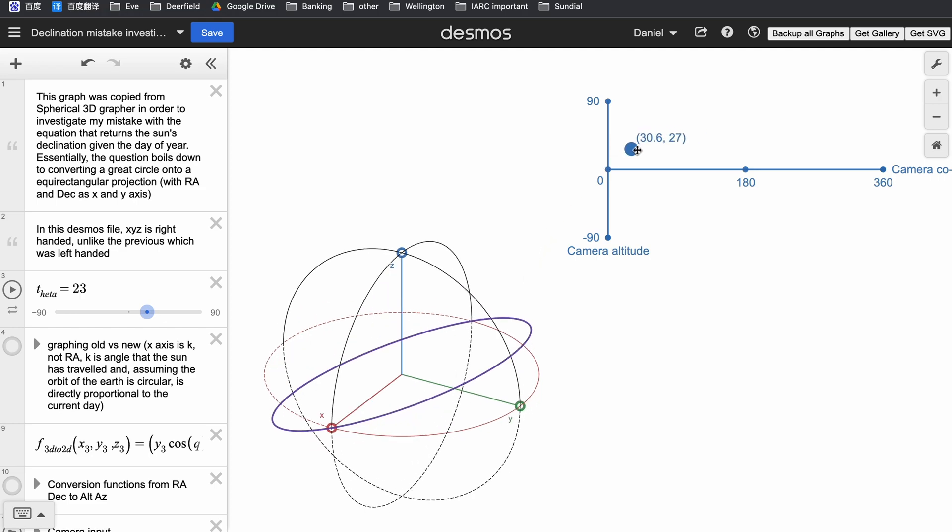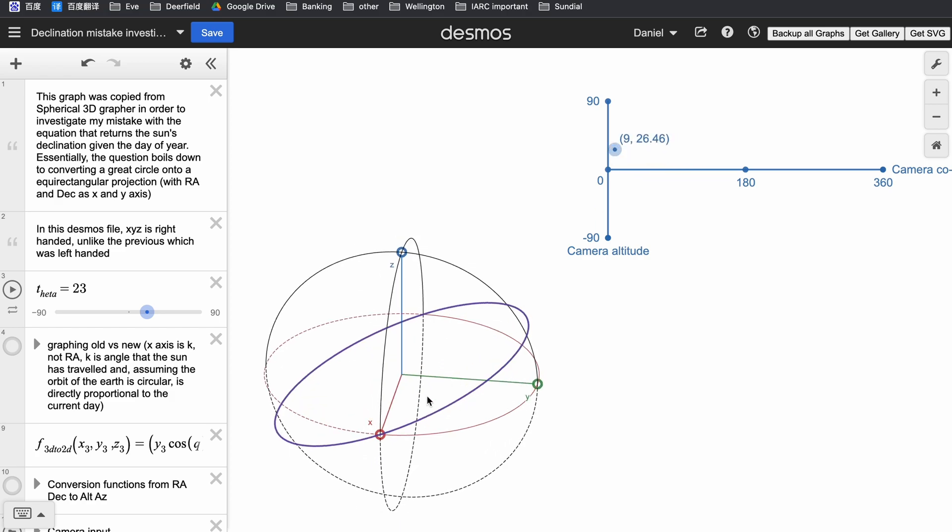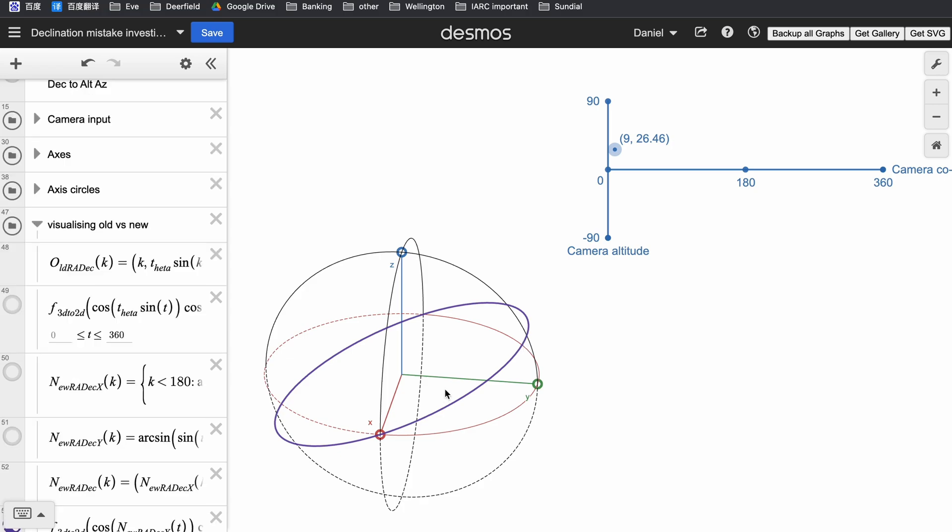And so the easiest way to describe this curve is to parameterize this curve based on an angle going around the circle. And in this graph, I've called this parameter k. You can see all the equations here involve the parameter k. And k is the measure of the angle starting from 0 here around this circle, and it's essentially the angle of the sun around the path that it travels throughout the year.